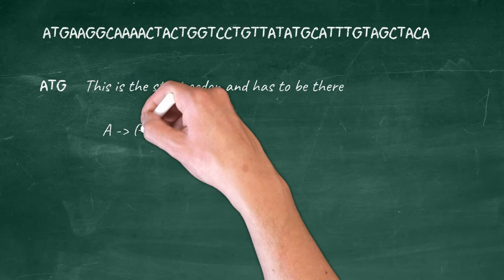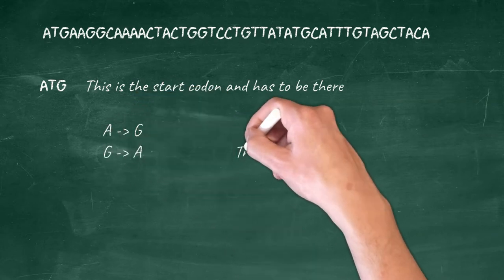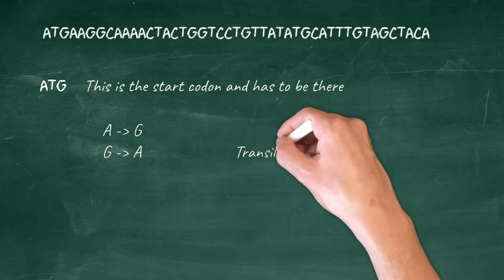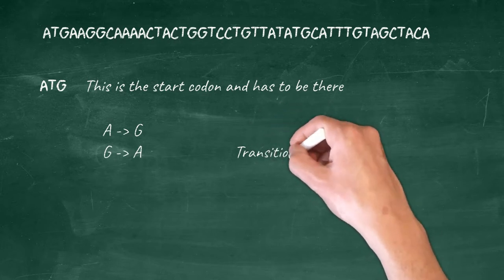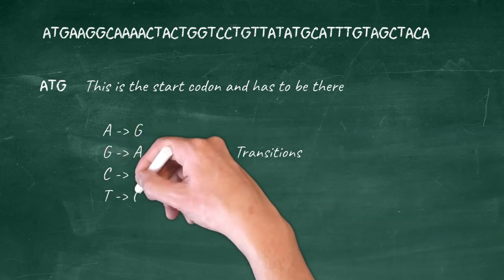Transitions are the most common changes in DNA. This is where a purine base is replaced by another purine base or a pyrimidine base is replaced by another pyrimidine base. These can occur anywhere in the sequence. There is no reason why there should be a zone where they cannot occur.